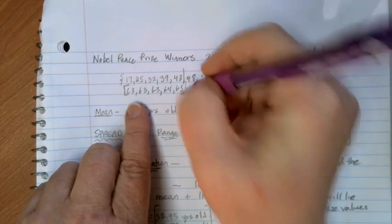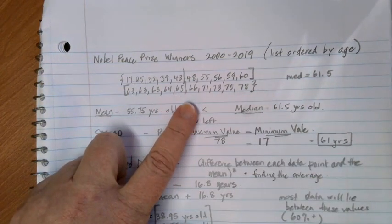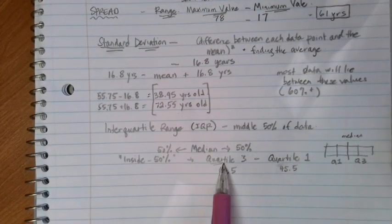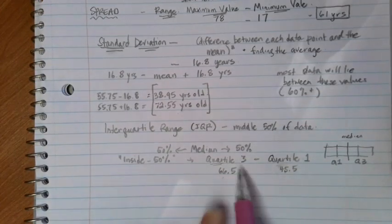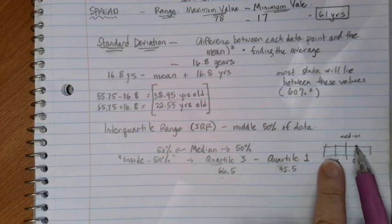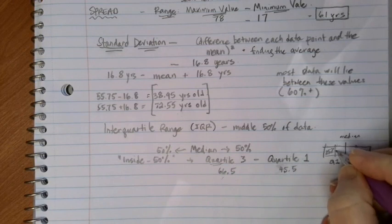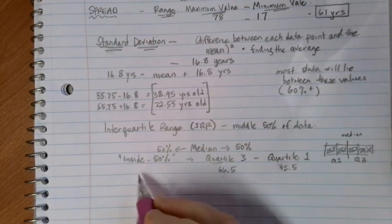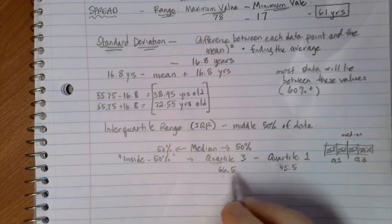So again, so quartile three, we figured out would be about 66.5, quartile one about 45.5. And because that's this, and these are each broken down to be 25% of the data.